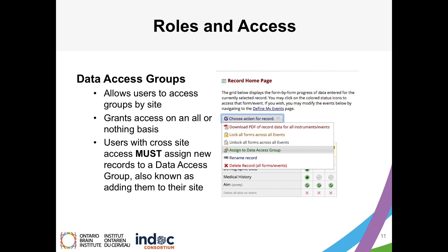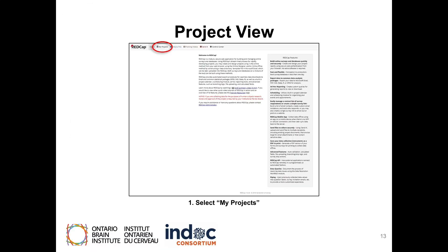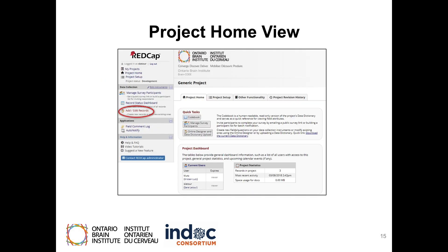Users with Cross-Site Access will be required to assign new records to Data Access Groups, also known as adding the record to their site. After logging into REDCap, the homepage will appear. You will see a link for My Projects on the top toolbar. Select My Projects to view the project's homepage. Within the Projects view, you can select the title of your study to see the project's homepage. You can add a new subject or edit a pre-existing subject by choosing the Add or Edit Records button.